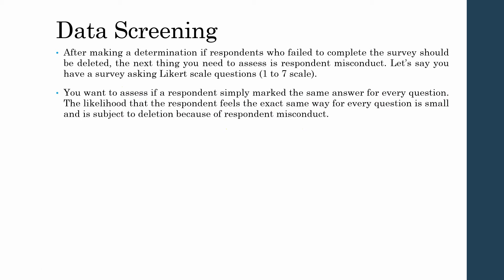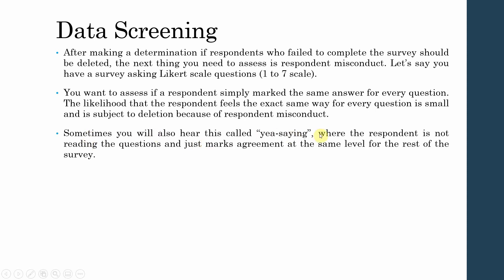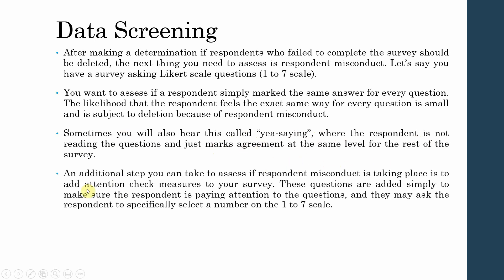If a respondent answers all questions with a similar response, it is highly likely that this is misconduct and they did not actually read the questions. Sometimes you will also encounter yea-saying, where the respondent is not reading the questions and just marking the answers. An additional step to assess respondent misconduct is to add attention check measures to your survey — questions that ask the respondent to specifically select a number on a 1 to 7 scale. You may also add reverse questions to your questionnaire to help assess respondent misconduct.